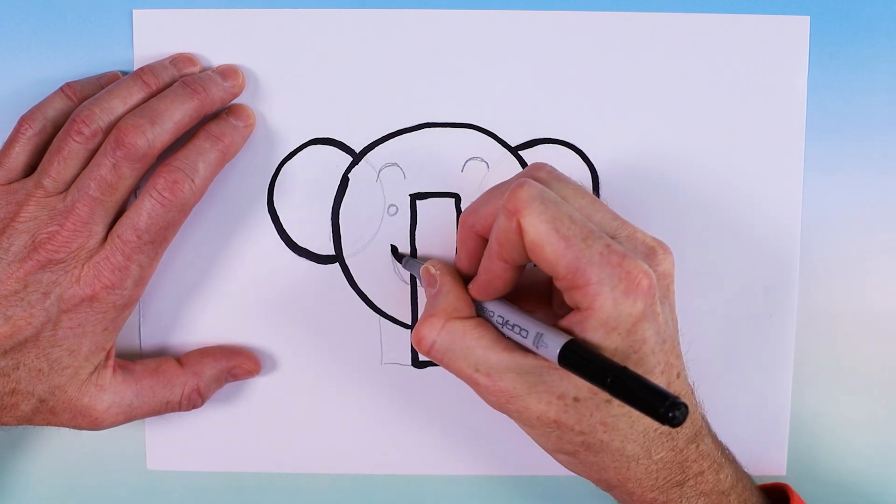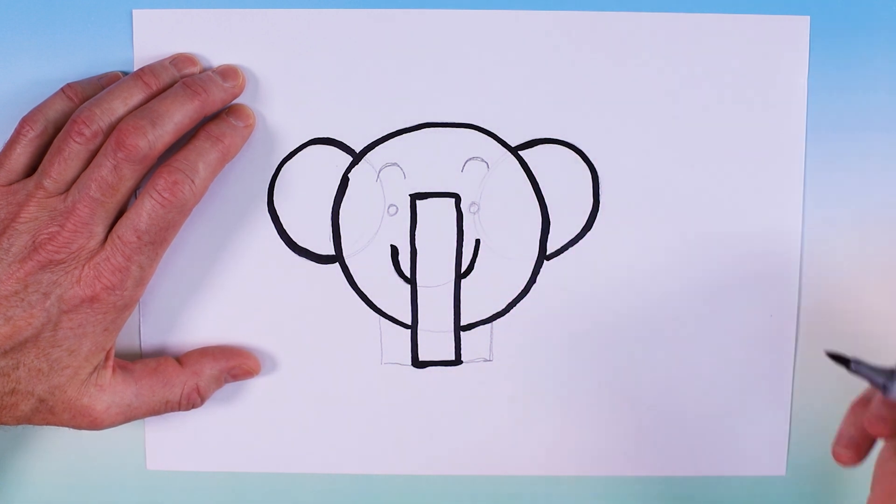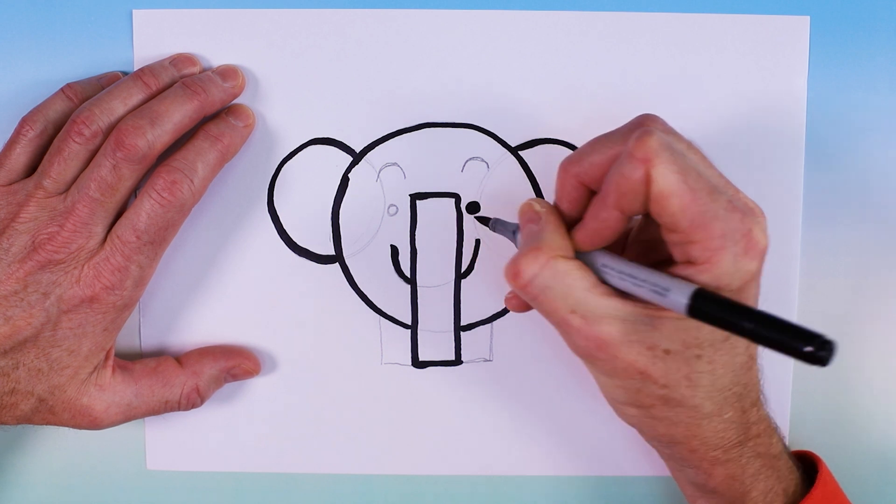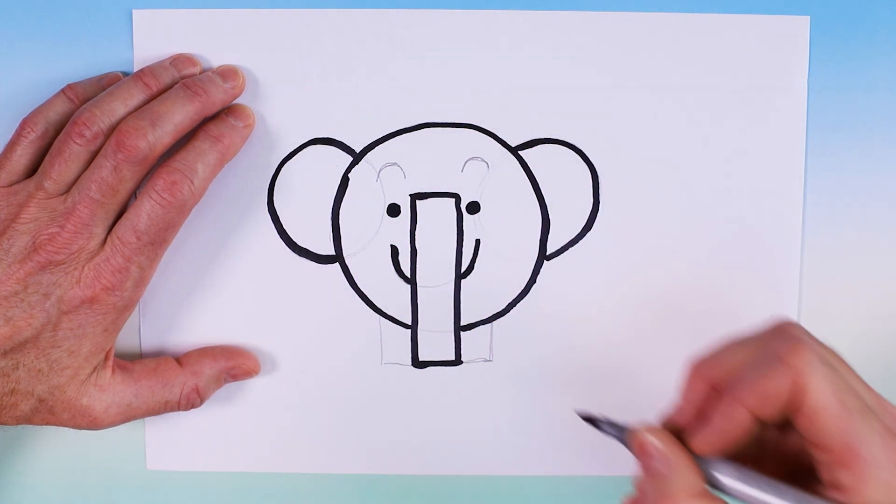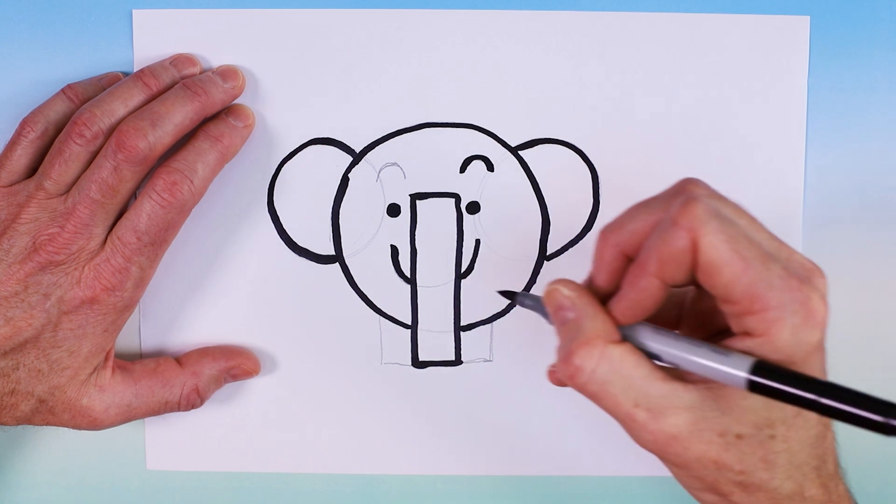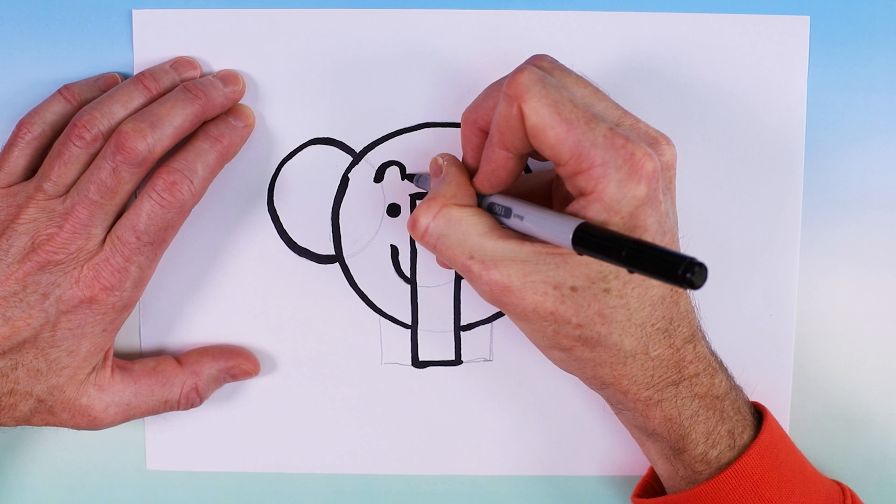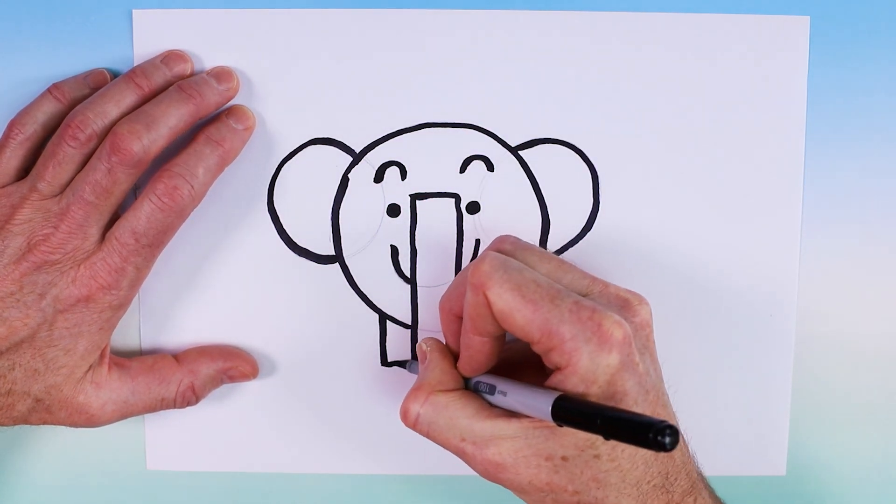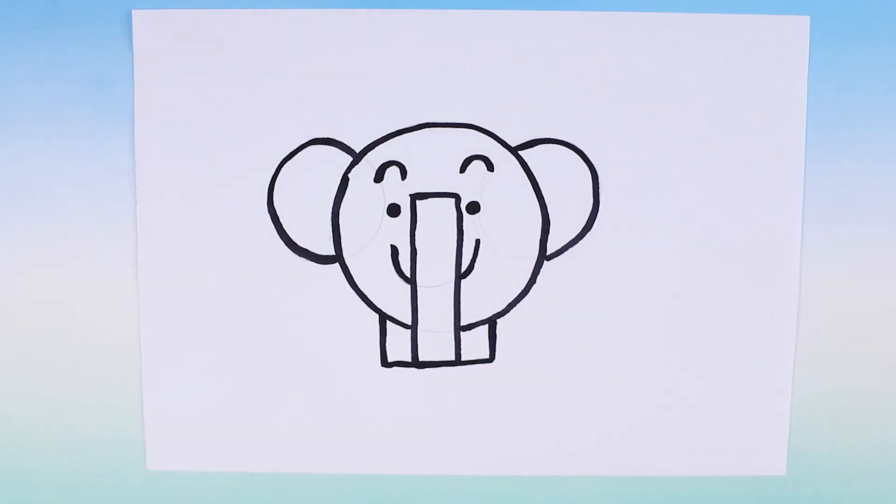Then we're going to do the mouth, which is partly hidden behind the trunk. And then the eyes, which we're just going to fill in black. And follow this with the two eyebrows. Really simple. Just tidy that up a little bit. And the last thing to do are the feet. And there you have the outline of our elephant.